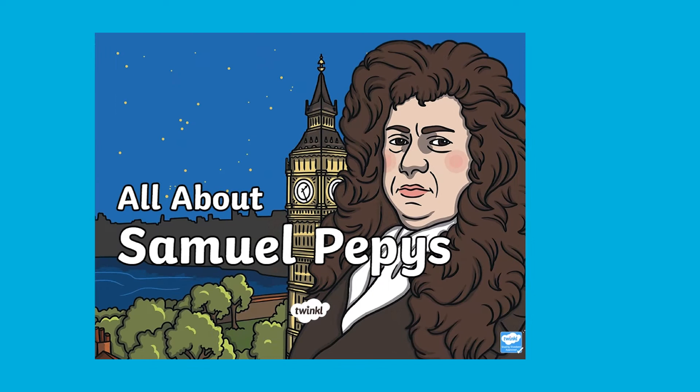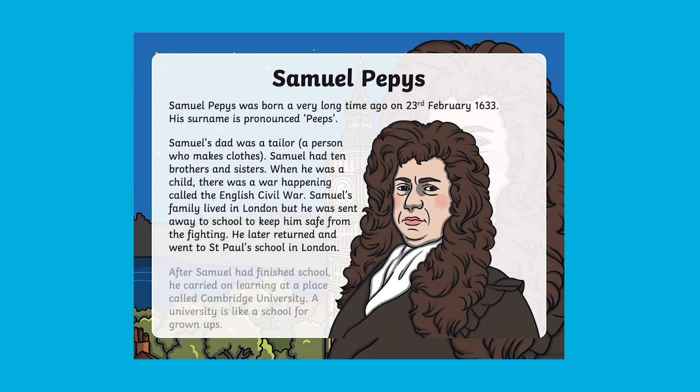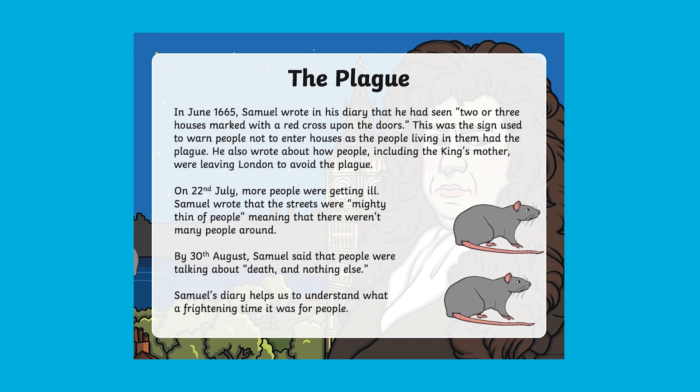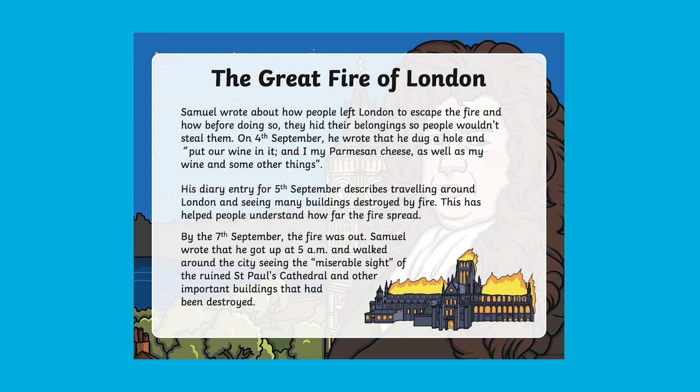This resource is great to enable children to gain a deeper understanding of the Great Fire of London and the important role that Samuel Pepys played in recording what took place. In this PowerPoint you'll find information about who Samuel Pepys was, what he did to help us learn about the Great Fire of London, and how he recorded all the historical information.